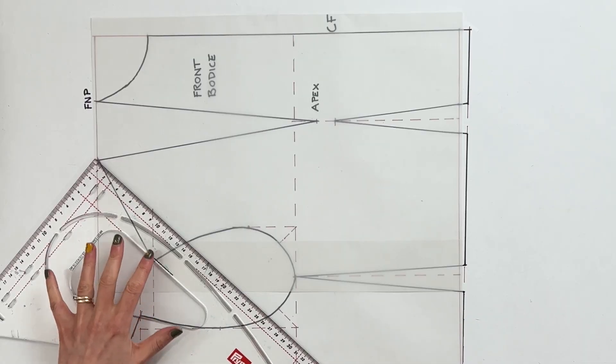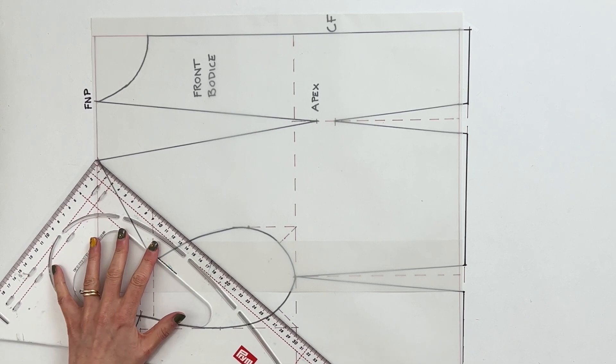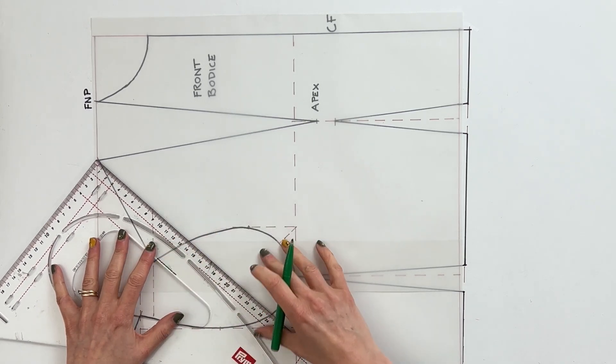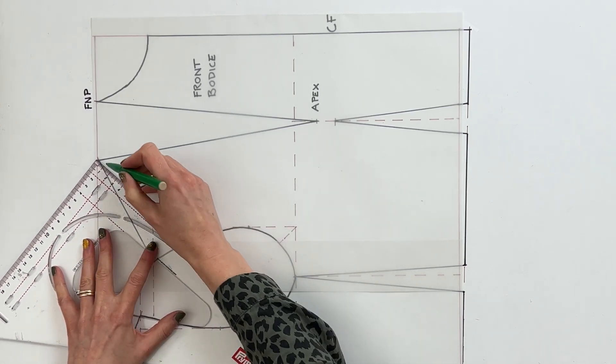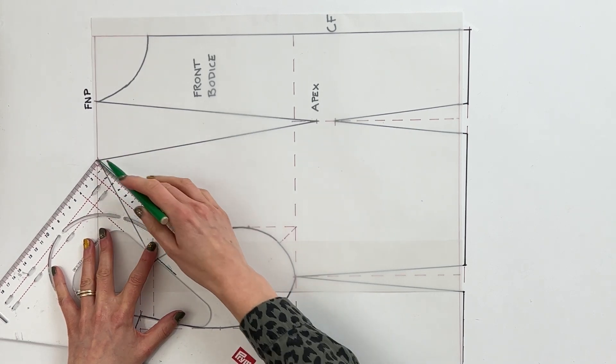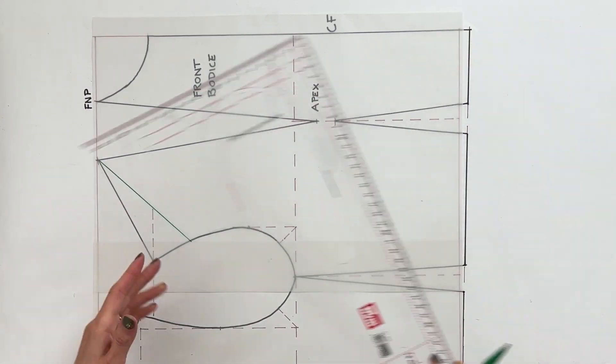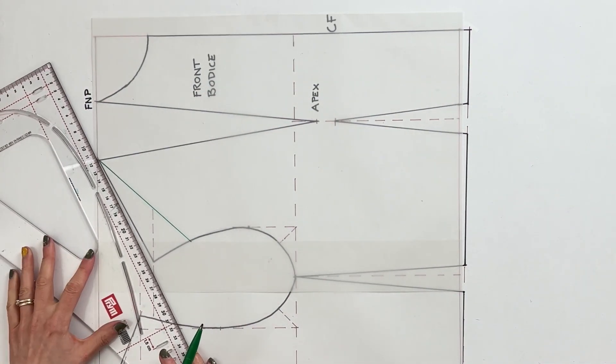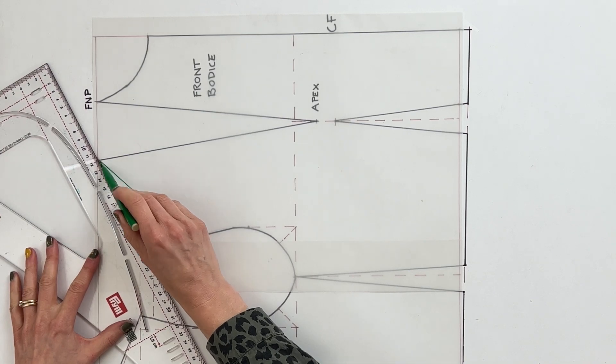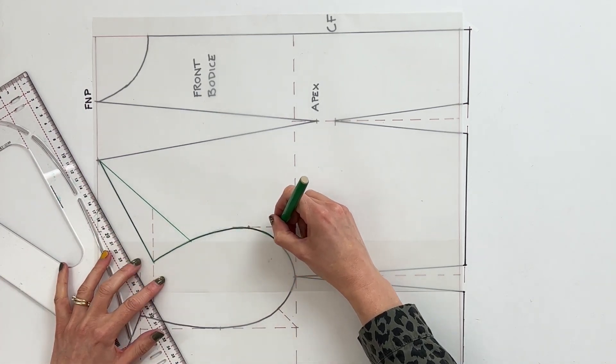We're going to work on the front bodice first because it's a little bit more simple because it hasn't got the dart. So to start off with we're just going to draw a point maybe about a quarter of a way along the armscye from the neck point of the dart at that point along there. Now the next thing we're going to do is we're going to draw in our shoulder line and just trace around the armscye curve.